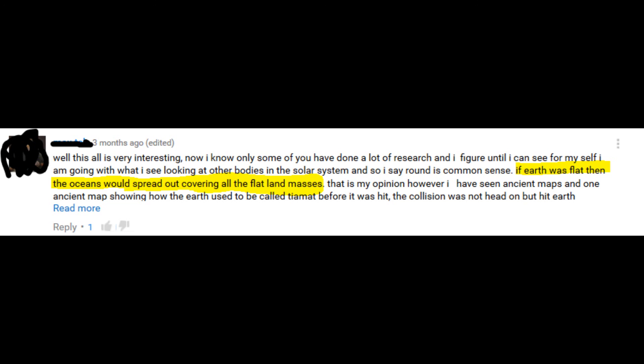This is a prime example of somebody who has really fallen victim to somebody who claims to be speaking the truth, but they're really just half-truths. He thinks that if the earth were flat, then the oceans would spread out, covering all the flat land masses. He can't conceive of the idea that there's different elevations on the plane. He just thinks, oh, flat? Oh, you mean whole thing. Okay. If you say it's flat, then that must mean there cannot be any basins where water can stay. People are programmed.